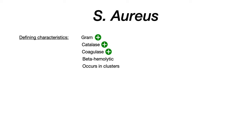Staph aureus is gram positive, catalase positive, coagulase positive, beta hemolytic, and it occurs in clusters.